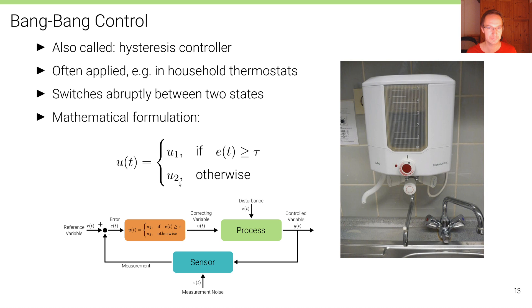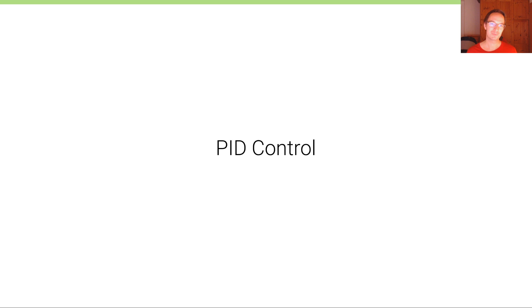This controller in its most simple form has three parameters: u1, u2, and tau. If you think of a thermostat, it will turn the heating on if the temperature falls below a certain threshold — outputting correcting variable u1, which might mean 'turn the heating on' — and otherwise it outputs u2, which means 'turn the heating off'.